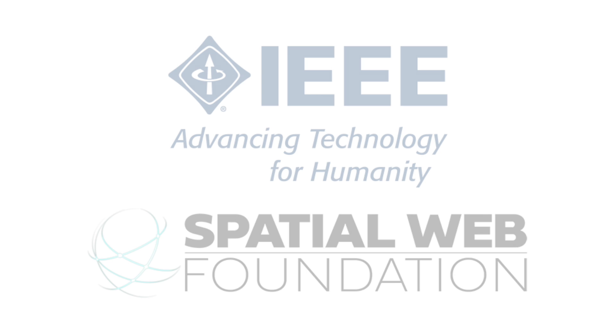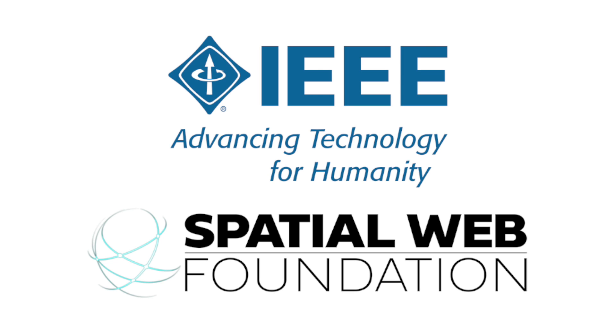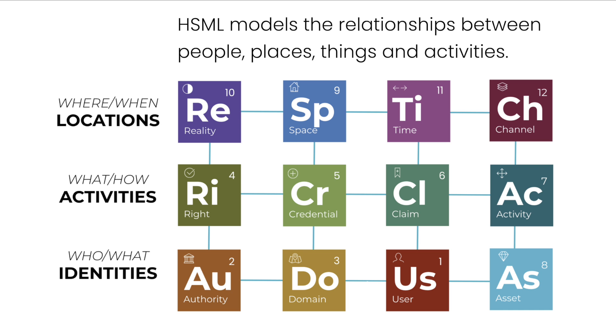Think of HSML as a common language that enables AI to model the relationships between people, places, things, and activities.